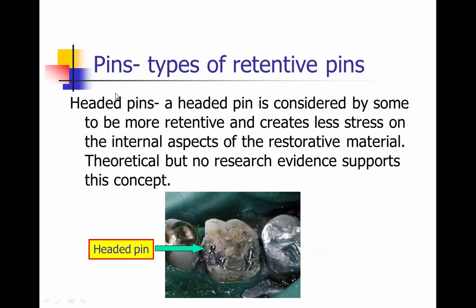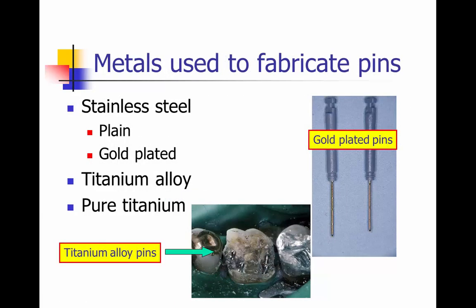Pins are made to be retentive — the restorative material is placed around them. Here we're looking at headed titanium alloy pins placed in a molar; we can place either amalgam or composite around them. The metals used for pins are typically stainless steel — either plain or gold-plated — or titanium alloy and pure titanium. To the right we see some gold-plated stainless steel pins, and in the tooth preparation we see titanium alloy pins.